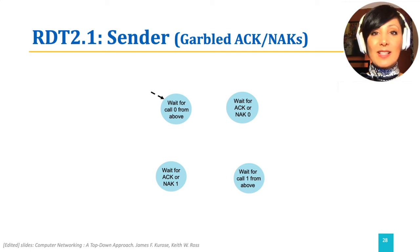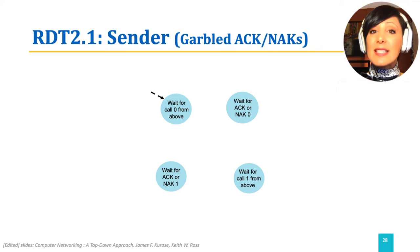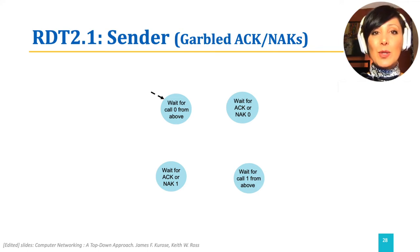RDT 2.1 solves the problem of corrupted acknowledgements using stop-and-wait and sequence numbers.